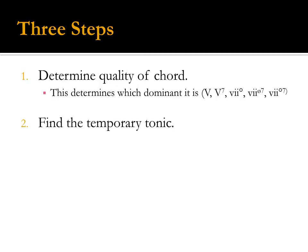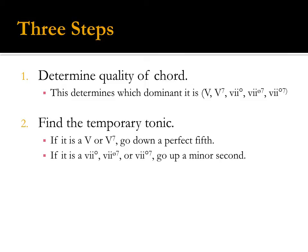Next, find the temporary tonic. If it is a V or V7, go down a perfect fifth from the root of the dominant. If it is one of the seven chords, go up a minor second to find the temporary tonic. The seven chord is the leading tone of the temporary tonic.